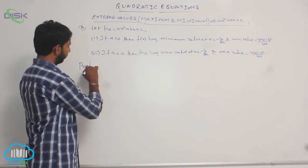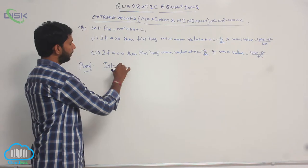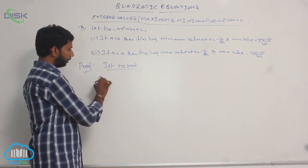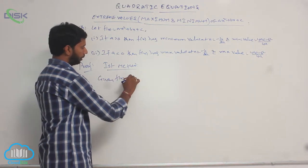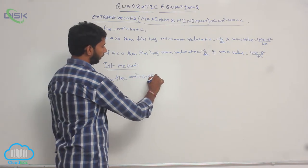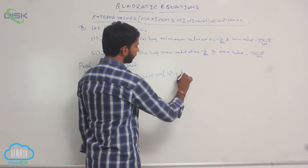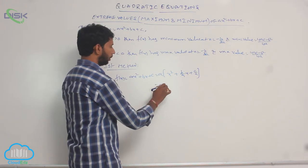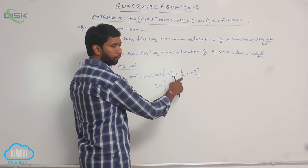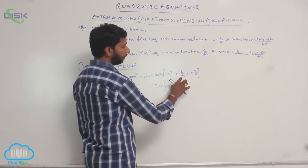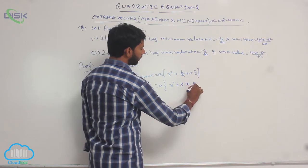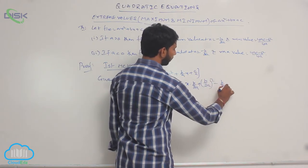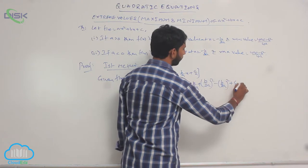Go to its proof. It has two methods. First method: given f(x) equal to ax² + bx + c. Taking a as common, that is a of x² + (b/a)x + c/a. This is converted into a perfect square: a of x² + 2·x·(b/2a) plus adding and subtracting (b/2a)², plus (b/2a)² minus (b/2a)² plus c/a.